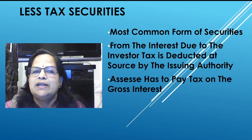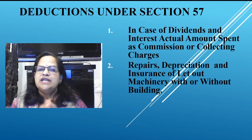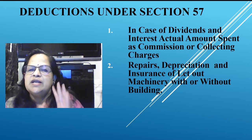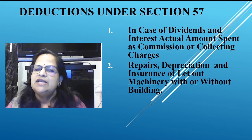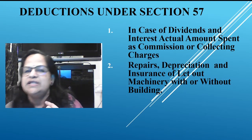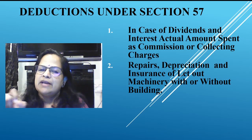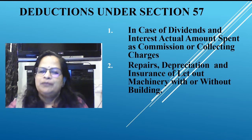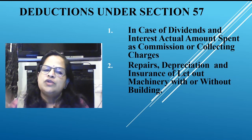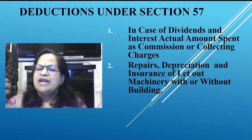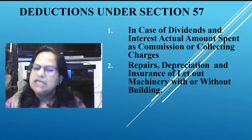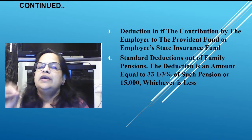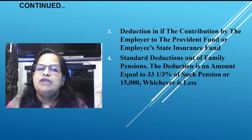Deductions under Section 57: for income from other sources. First, in case of dividends and interest — actual amount spent as commission or collecting charges is deductible. For example, if the bank collects dividend and charges 200 rupees as collection charges, that is an allowable deduction. Second, repairs, depreciation, and insurance of let-out machinery with or without building are allowed deductions.